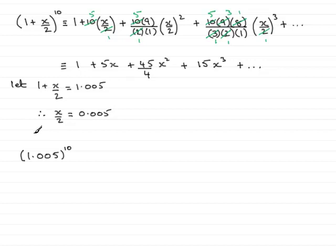And multiplying both sides by 2 gives me x equals 0.01. So that's the value of x that I'm going to substitute into this expansion here. And it will give me an approximation to 1.005 to the power of 10.